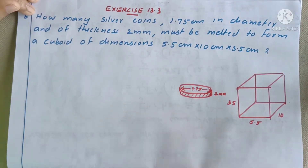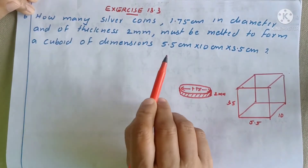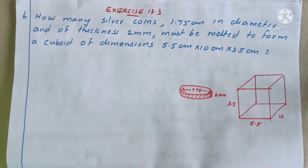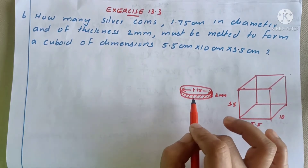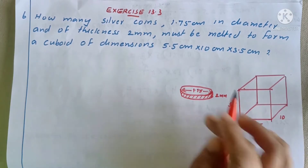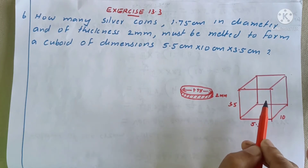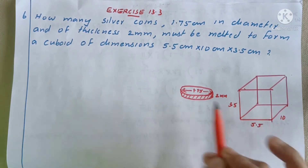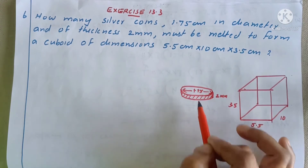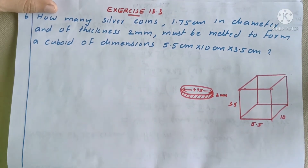The dimension includes the height, length, and height — that is the cuboid. This is one cuboid. The silver coin is melted, so the volume of the cuboid equals the volume of the coins. The measurements are okay.